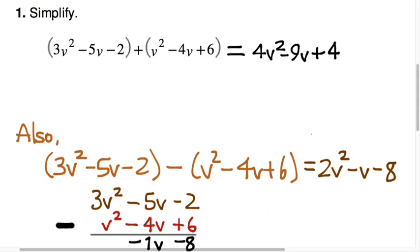And a coefficient of 1 is invisible, or at least it can be, so we often just write that as minus v.